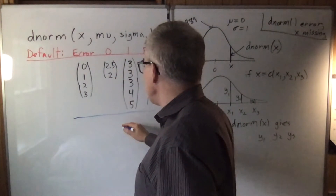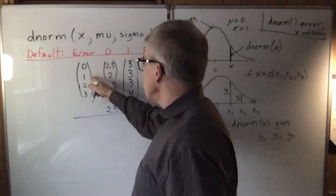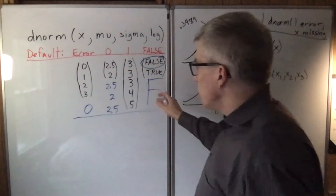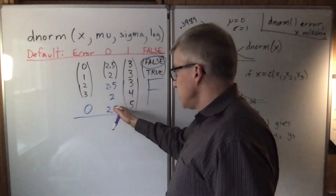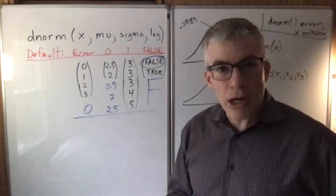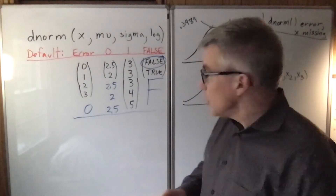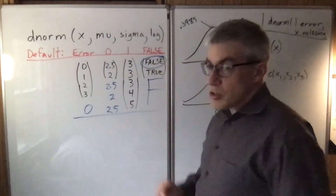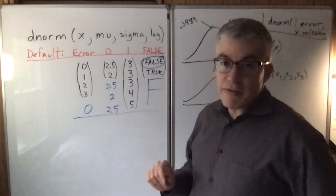So after recycling, the x positions become 2, 2.5, 2, 2.5, 2; the means are 2.5, 2, 2.5, 2, 2.5; and the sigmas are 0, 1, 2, 3, 0 — not taking any logarithms. If I had started with a true, it would be taking logarithms. If I gave the log argument a number or set of numbers, it just looks at the first number — is it zero? False. Otherwise, it gives the logs.